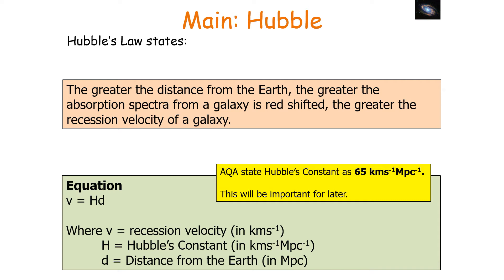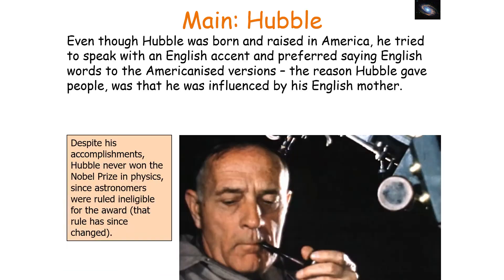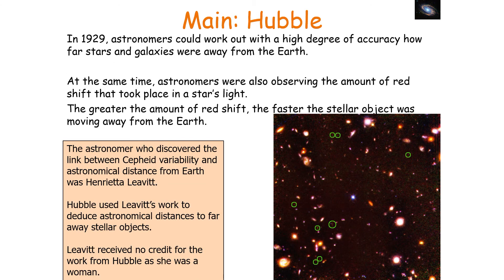It's important to note the impact that Hubble had on this field. The astronomer who actually discovered the link between Cepheid variability and astronomical distance was Henrietta Leavitt. Hubble used Leavitt's work to deduce astronomical distances to faraway stellar objects, but Leavitt received no credit for her work from Hubble, as she was a woman.